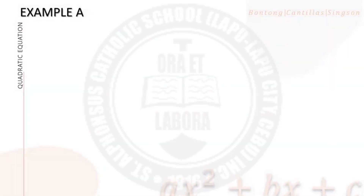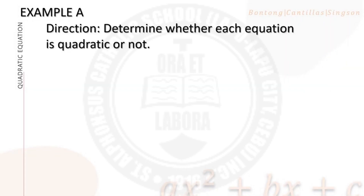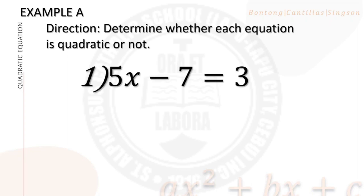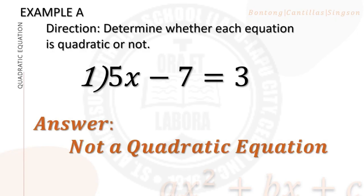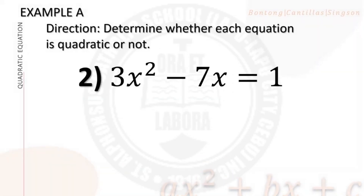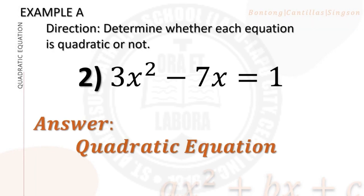Now let's determine whether each equation is quadratic or not. Number 1: 5x minus 7 equals 3. This is not a quadratic equation because the term with the highest exponent is 5x, and it is of degree 1. Number 2: 3x squared minus 7x equals 1. This is a quadratic equation because the term with the highest exponent is 3x squared, and it is on the second degree.